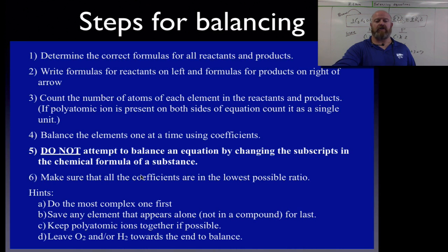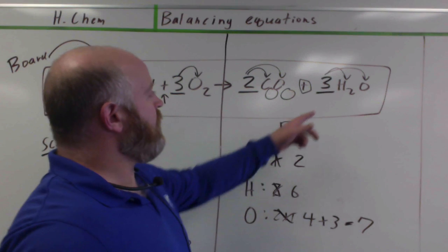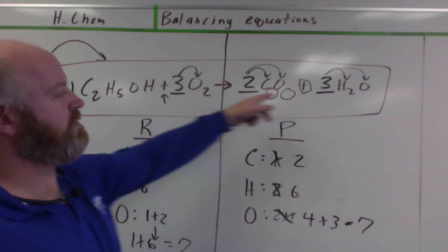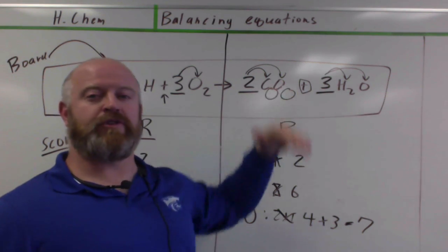When you're done, make sure all the coefficients are in the lowest possible ratio. Sometimes you're balancing and figuring it out. You may end up with a ratio between all these that isn't as low as possible. Just reduce it down.